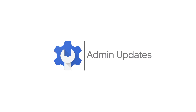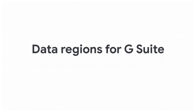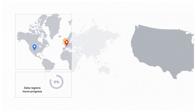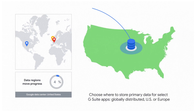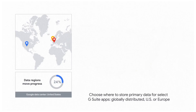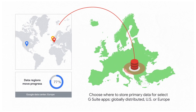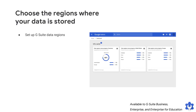And now for our admin updates. Some multinational organizations have requirements around where their data is stored. With this new feature, you can designate the region in which your primary data is stored for select G Suite apps — globally, in the US, or in Europe. Setting up and managing data regions is quick and easy. There are no minimum seat requirements, you can change your covered data's location at any time, and all data moves are completed within months.